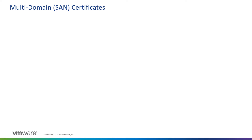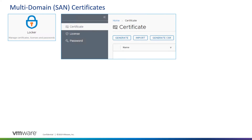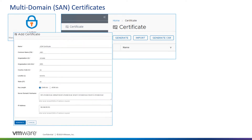Now let's move on to the multi-domain SAN certificates. In LCM 8.1 we'll use the Locker service, which manages certificates, licenses, and passwords. Once logged into the Locker service, we select the certificate menu and click Generate to create our two certificates — one for VIDM and one for VRA. On the VIDM side, the hostname must include the main IDM FQDN and the three org records: default-tenant for the provider org, tenant-1, and tenant-2. The IP address points to the physical IP of the IDM appliance and is optional.